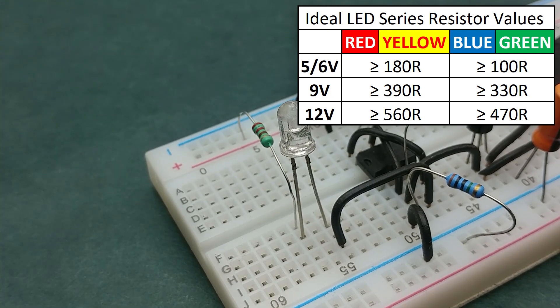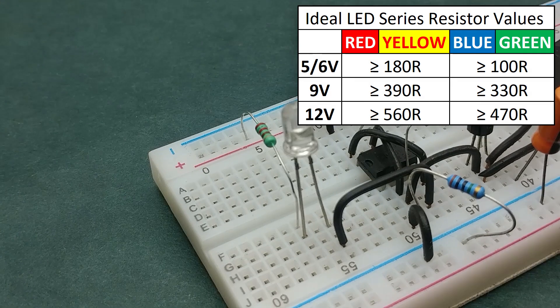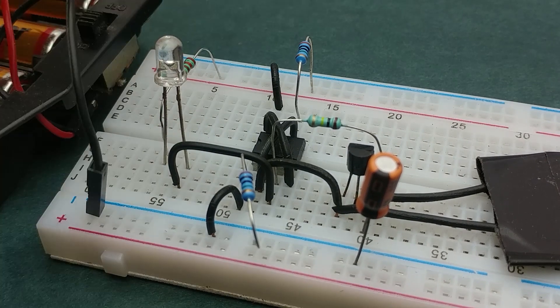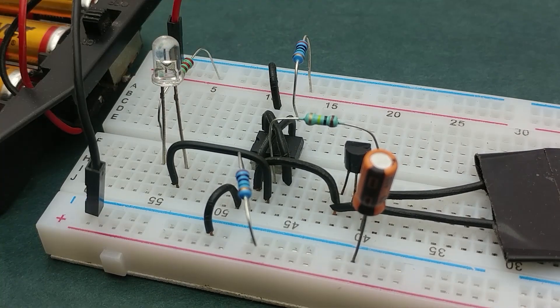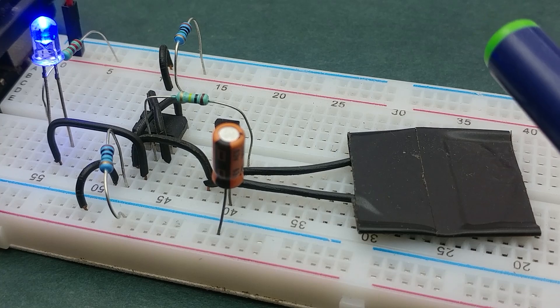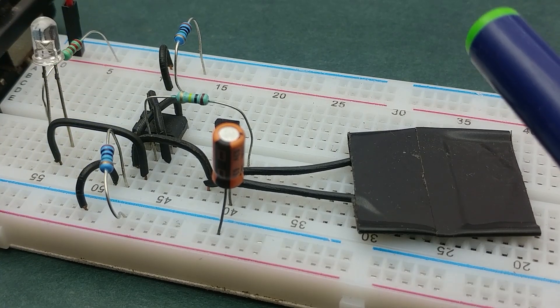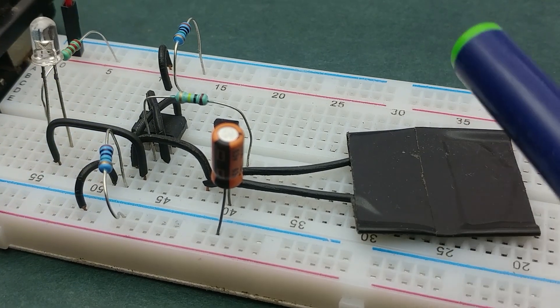Find out the value of resistor you need to use from this table. Finally connect the power supply and the circuit is now ready. The LED turns on with a tap or knock on the Piezo speaker and turns off with another tap or knock.